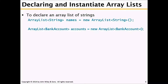To declare and instantiate an ArrayList of strings, write: ArrayList<String> names = new ArrayList<String>(); By default, the size is 0. The syntax requires the new keyword, followed by ArrayList, an opening angle bracket, the type String, a closing angle bracket, and then opening and closing parentheses ending with a semicolon.